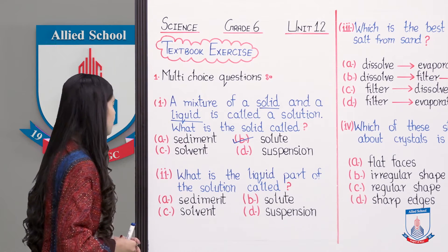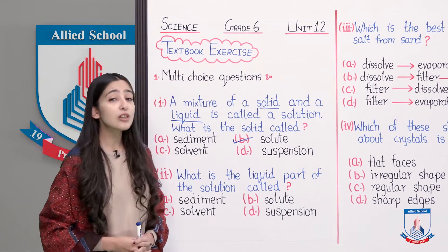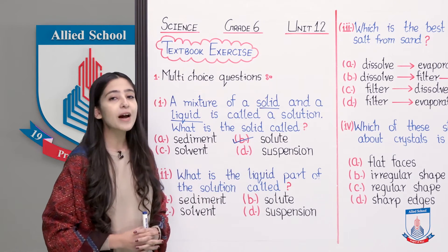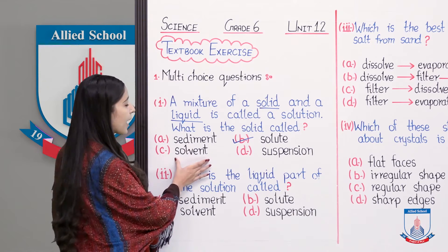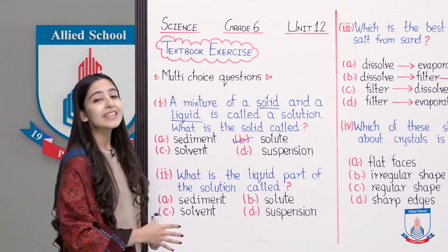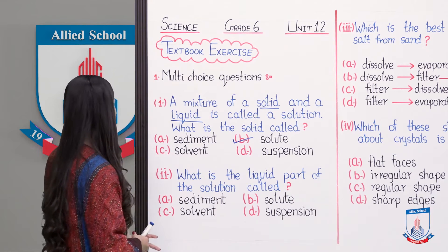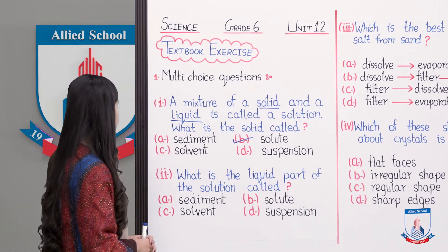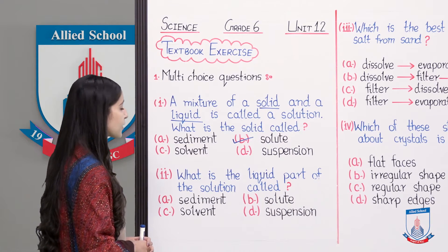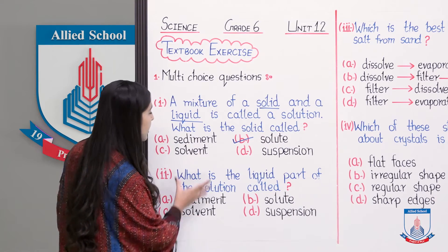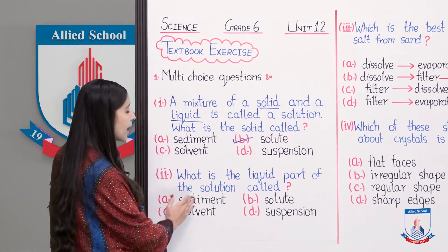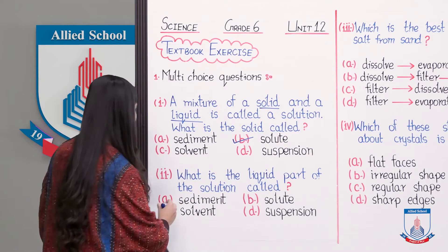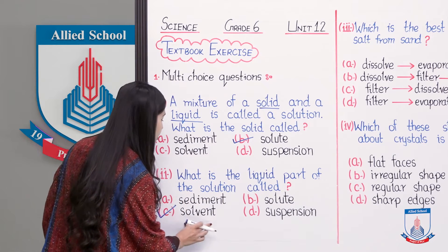Statement number 2: what is the liquid part of the solution called? We have created a solution — its solid part is solute — so what is the liquid part? The liquid part is called solvent. The options are: A is sediment, B is solute, C is solvent, and D is suspension. The correct option is C, which is solvent.